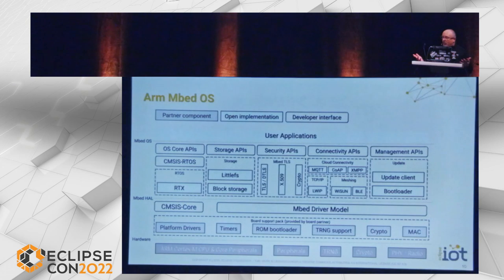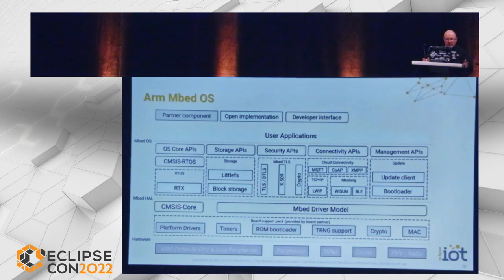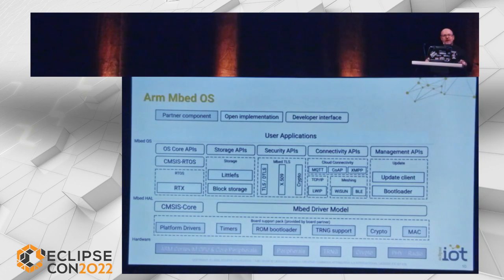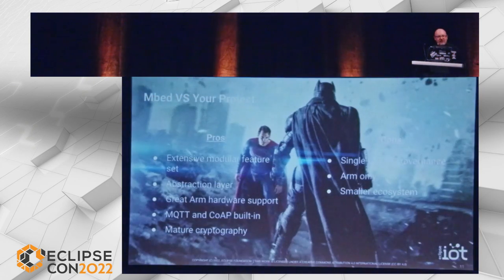In terms of functionality, Mbed is quite comprehensive. You can run Mbed as an RTOS or not, depending on your needs. It comes with its own constrained-device optimized file system, a full suite of security APIs supporting TLS, DTLS, and cryptography, and even built-in implementations for CoAP, MQTT, and other protocols. It also has a hardware abstraction layer, which means that if you're writing for a specific ARM core you can port fairly easily to other cores — a good way to keep your software alive long-term.